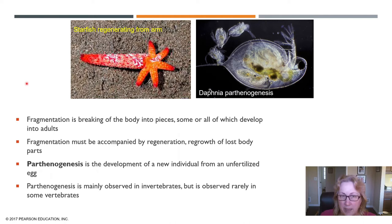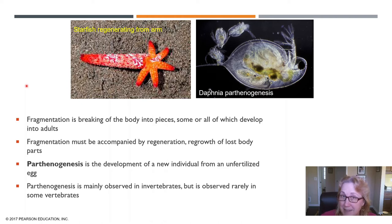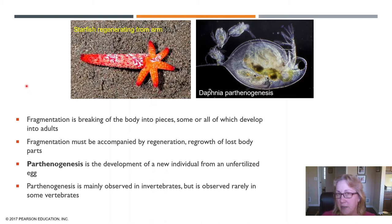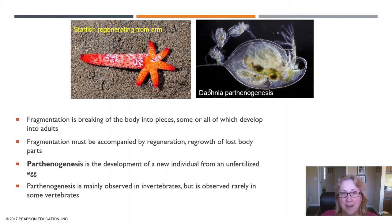Some animals, although they don't technically reproduce asexually intentionally — like starfish — if you chop them up into pieces or they get ripped apart by a predator, they can regenerate. Parts that are complete enough can regenerate a whole organism. We talked about that with flatworms too — you could take a single flatworm, chop it into several pieces, and most of them will regenerate an entire individual. Technically that's asexual reproduction, but it's not really intentional reproduction. Here's a starfish arm that's regenerating the rest of the starfish.